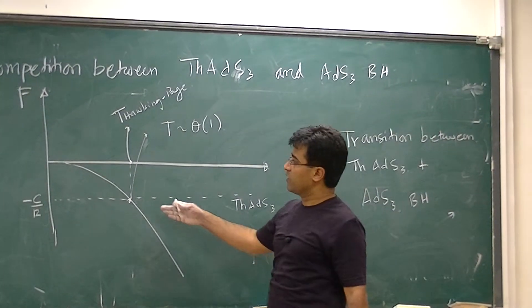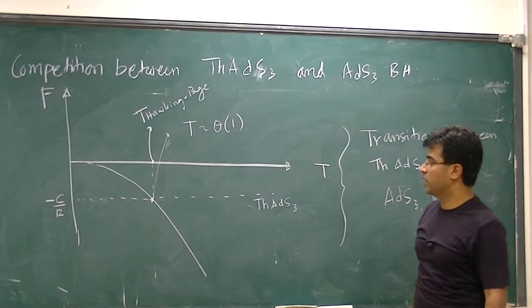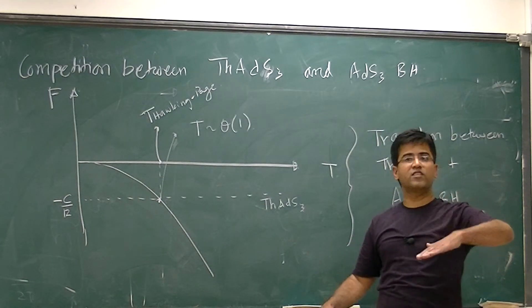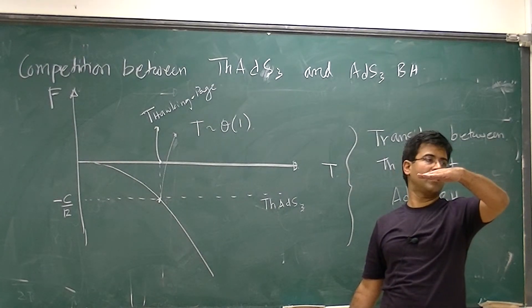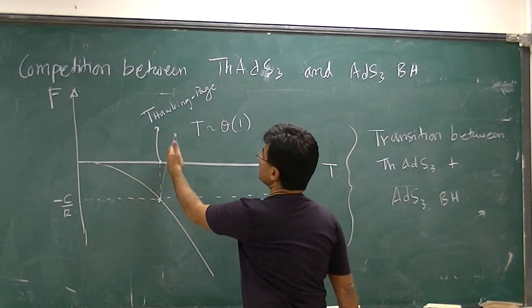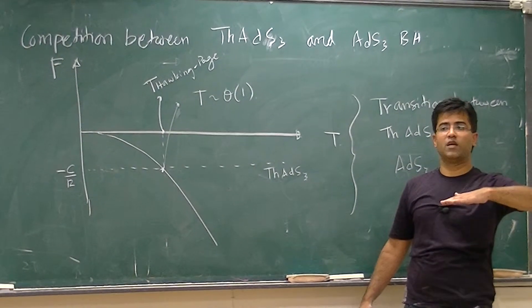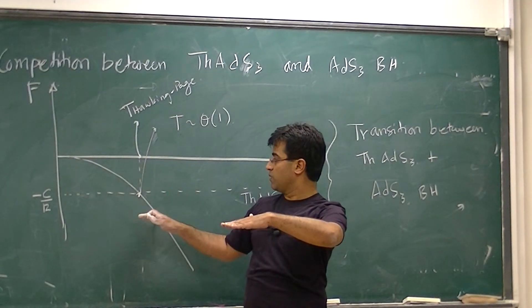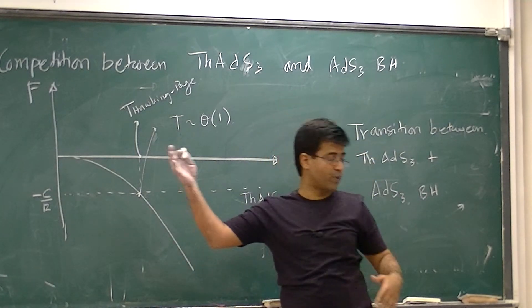A CFT which has classical gravity in ADS3 as its dual description is a weird kind of CFT. Thermal ADS3 is a vacuum state, so the density of states is actually zero to begin with. Then, after a particular gap, the density of states suddenly grows exponentially. Below the Hawking-Page temperature, the density of states is zero or one — there's only one ground state and a gap in the system. For any temperature bigger than the Hawking-Page temperature, the ensemble is dominated by the black hole and the density of states grows exponentially in the energy in the way Cardy's formula predicts.